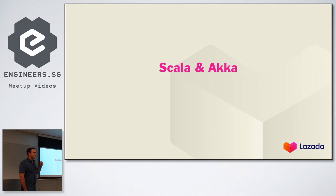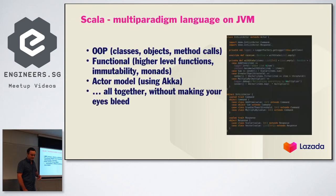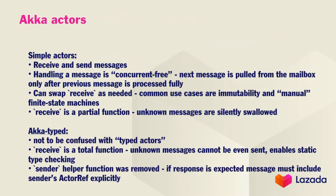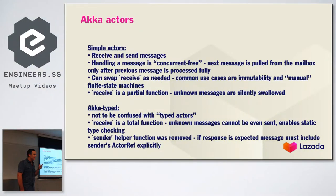In Scala, Actor Model implementation is provided by Akka. Just a few words about Scala if you don't know — it's a multi-paradigm language running on the JVM. It supports object-oriented, functional, and Actor Model programming, and even if you mix all three together, it doesn't make your eyes bleed. In Akka, with the latest version 2.5, they finally released the typed actor infrastructure, which was in beta state for quite a long time.